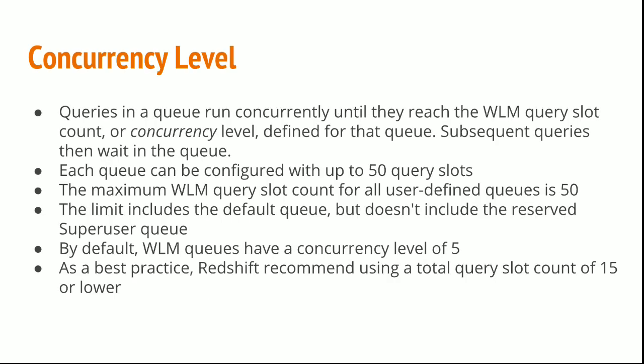Queries in a queue run concurrently until they reach the WLM query slot count or concurrency level defined for that queue. In our example the ETL queue has 5 concurrency levels and reporting has 5. Any query which comes beyond this will be waiting in the queue and when it finds some space then it will run. Each queue can be configured for up to 50 query slots. The maximum WLM query slot count for all user defined queues is 50. The limit includes the default queue but doesn't include the reserved superuser queue.